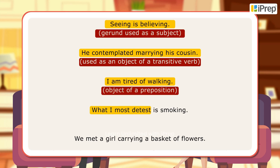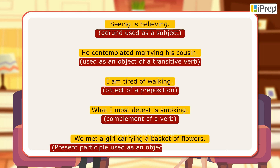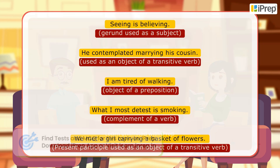'What I most detest is smoking' — complement of a verb. 'We met a girl carrying a basket of flowers' — present participle used as an object of a transitive verb.